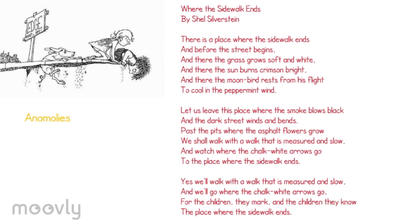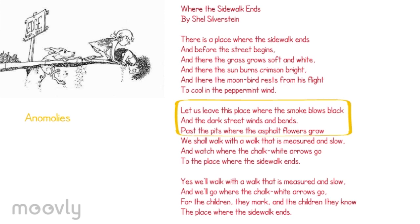Next, you look for anomalies. A quote from the poem reads: "Let us leave this place where the smoke blows black, and the dark street winds and bends past the pits where the asphalt flowers grow." This is the only part of the poem where the imagery is negative or ominous, which highlights the fact that the state of adulthood is more frightening than childhood.